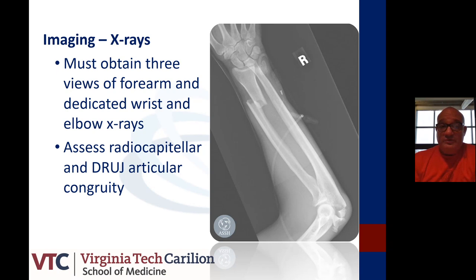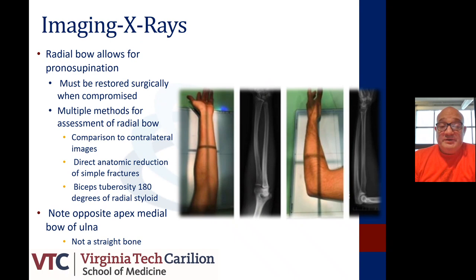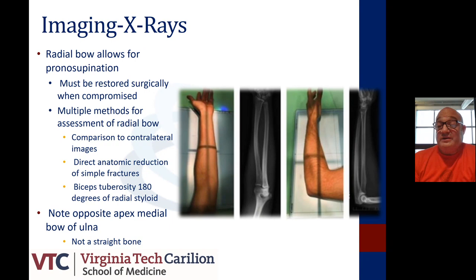You need to assess the radiocapitellar joint as shown. You may have elbow fractures, or you need to assess the distal radioulnar joint where you may have a dislocation or a fracture of the ulnar head. Imaging correlates quite nicely with these fracture patterns, and you need to look at the radial bow, which determines your pronation-supination, and this must be surgically restored when compromised. Methods to assess the radial bow include comparison to contralateral imaging, direct anatomic reduction for simple fractures, and looking at the bicipital tuberosity, which is usually lying 180 degrees to the radial styloid. The ulna has an opposite apex-medial bow, specifically on the lateral view.